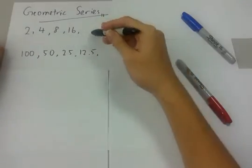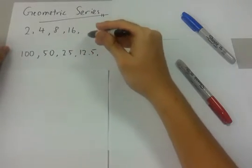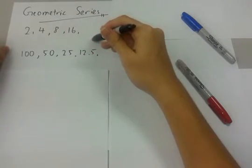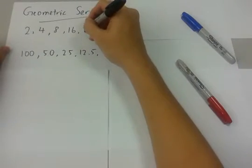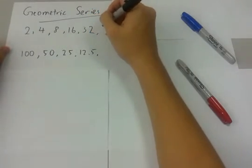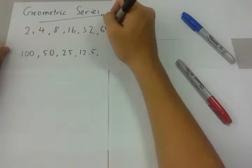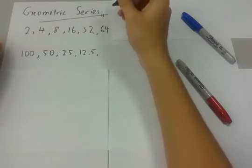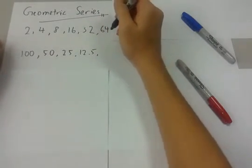As you can see at the first example, 2, 4, 8, 16, the next number should be 32, then 64, and so on and so forth. These are the powers of 2.